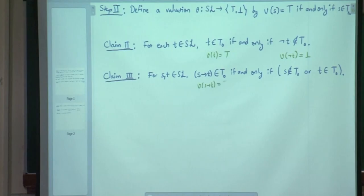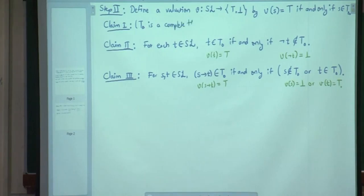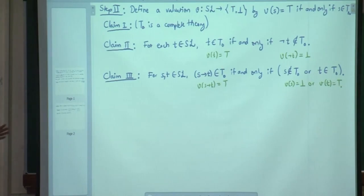The green version: V of S implies T is true if and only if V of S is false or V of T is true. Before we prove these two claims, we need a very strong observation: T0 is deductively closed.